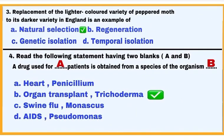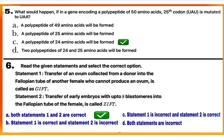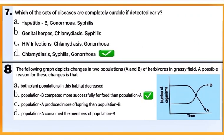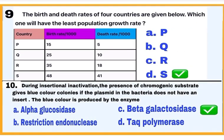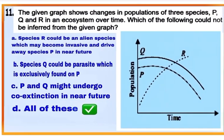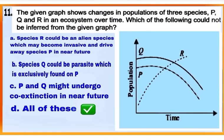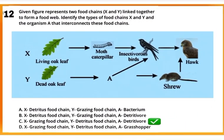Questions 5 and 6, 7 and 8. Question number 8 is based on the given graph. Question number 9 is based on data given in the table, then question number 10. Question number 11 is also based on the graph, and this is question number 12.